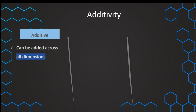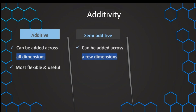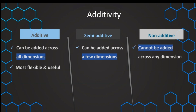The fully additive fact's total is meaningful and makes sense, making it the most flexible and useful fact with the highest analytical value. Then we have the semi-additive fact, which can only be added up across a few dimensions, making it less flexible. Last but not least, we also have the completely non-additive fact, which cannot be added up across any dimension. We'll look at examples for both and how to deal with them.